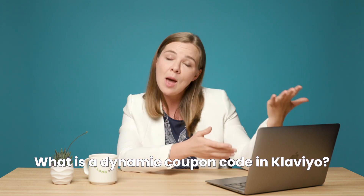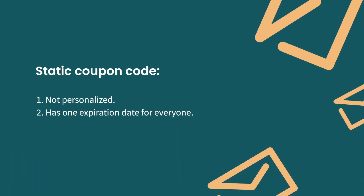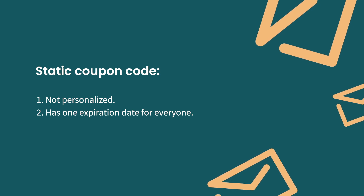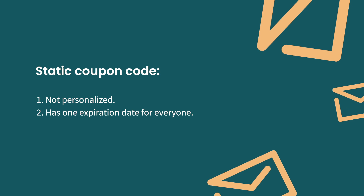Before we dive into the technical nitty-gritty, let me give you a quick word on what is a unique or dynamic coupon code in Klaviyo. Normally, when you go to coupon codes in Shopify, you can create static coupon codes — meaning the same code for everybody who wants to use it. If you set an expiration date, that date is the same for everyone. That's problematic if you want to limit codes to specific people. A common problem with static codes is they can easily be shared on discount aggregate websites. If you want to reduce coupon code abuse, that's where dynamic coupon codes in Klaviyo come in.